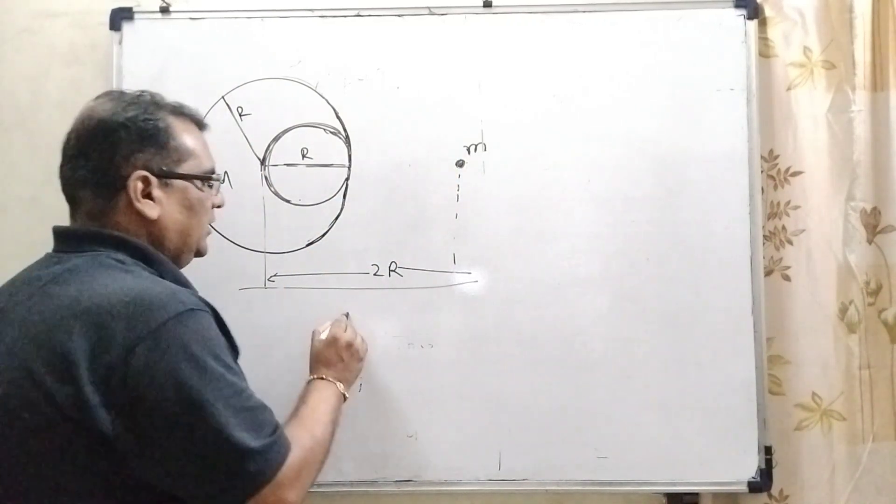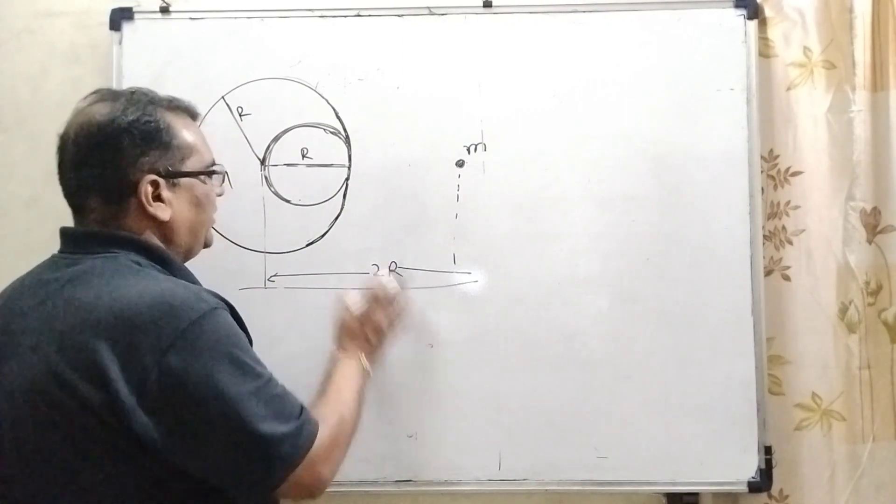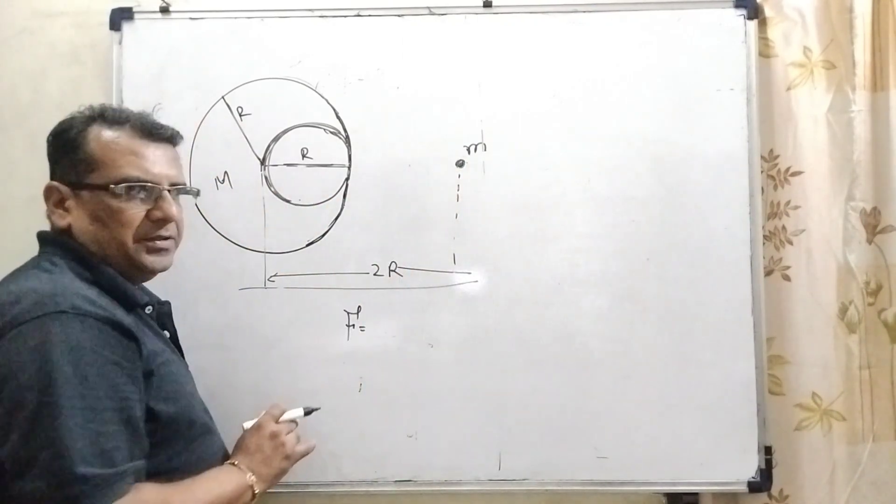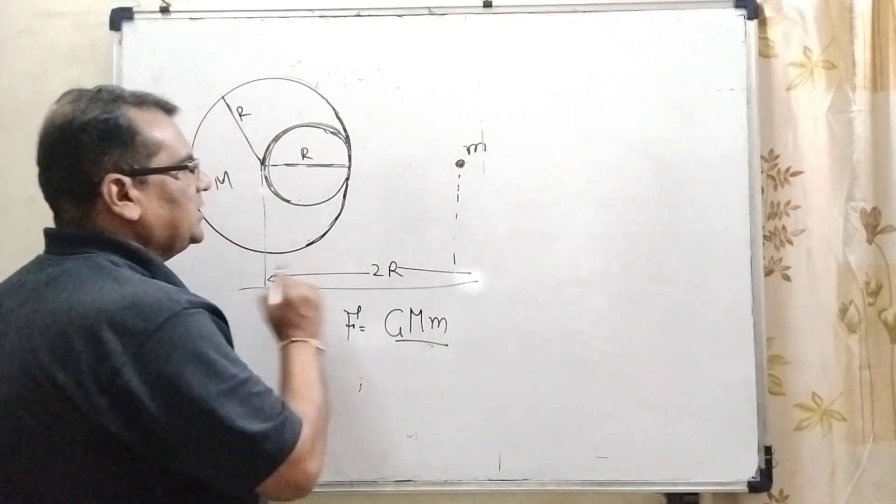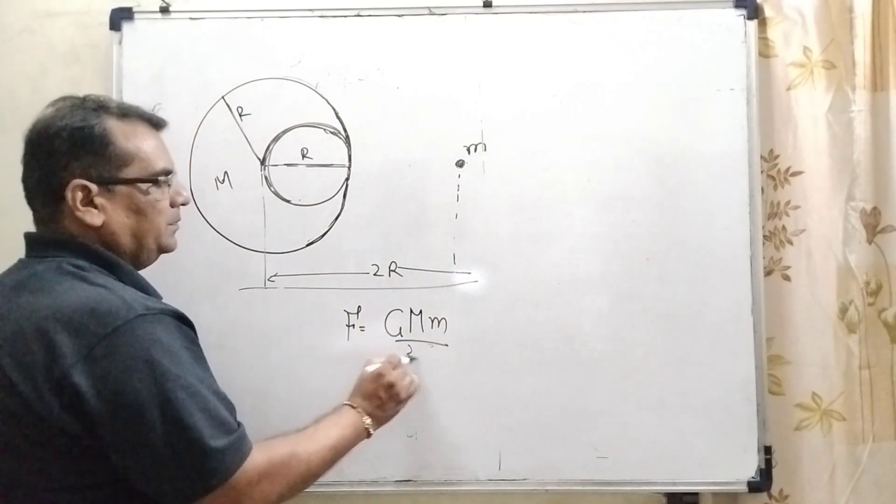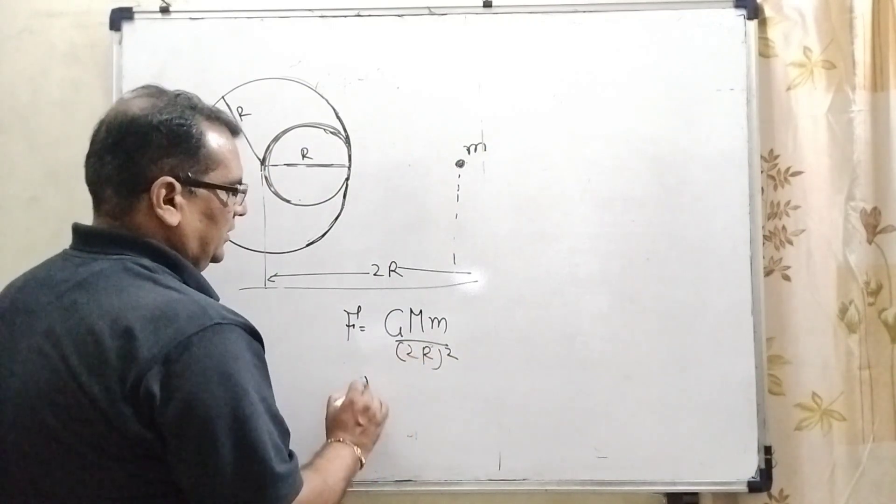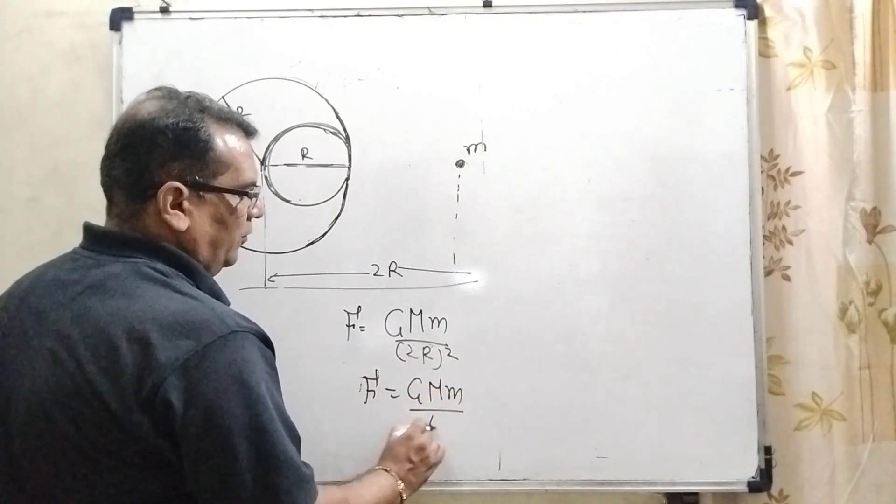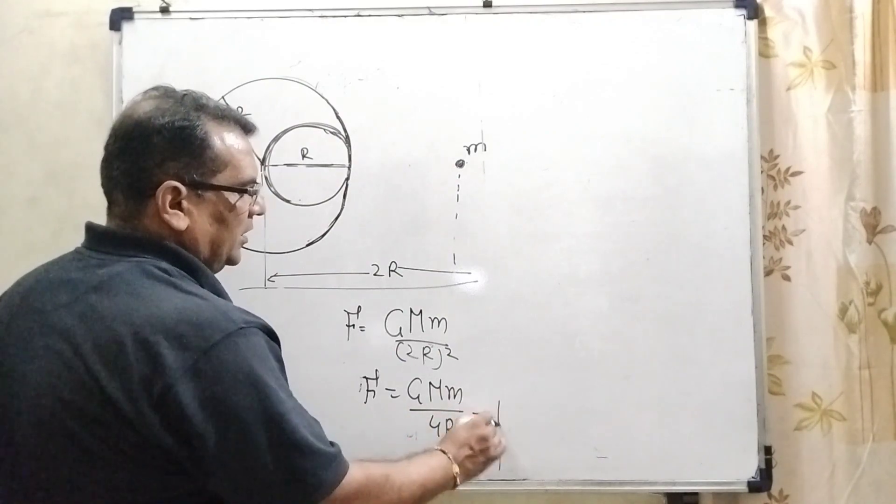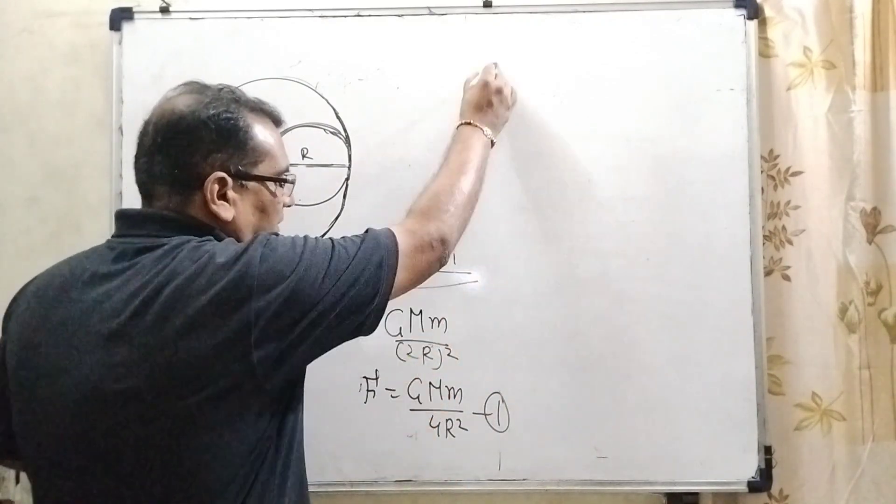Let us first calculate the force of attraction between the big sphere and this point object. So here, G capital M small m and the distance is 2R. F equals G capital M small m divided by 4R square. Given the equation number first.